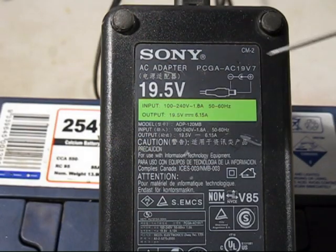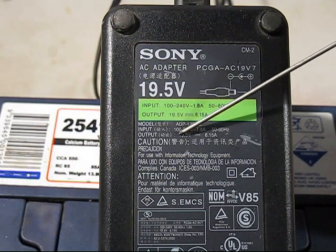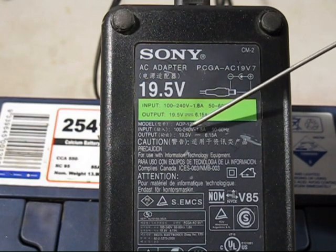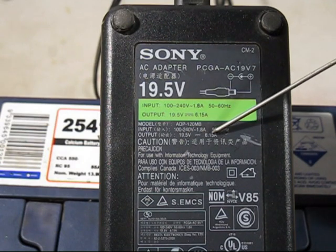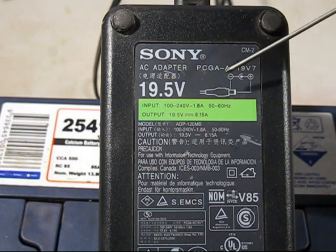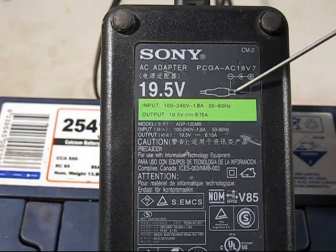This is the laptop power supply, we've got a close up. We're looking for the output, it says 19.5 volts. You need well above 12 volts to charge up a 12 volt battery, 6.15 amps. And here, this is another important point, you've got the plug. You need to know which is positive, center positive and negative on the outside shell.